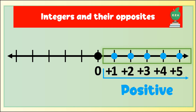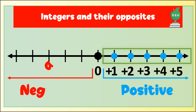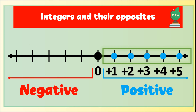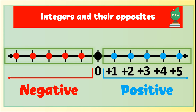Negative numbers are numbers to the left of zero or below, depending on the position of the number line. They must be written with a negative sign at all times.